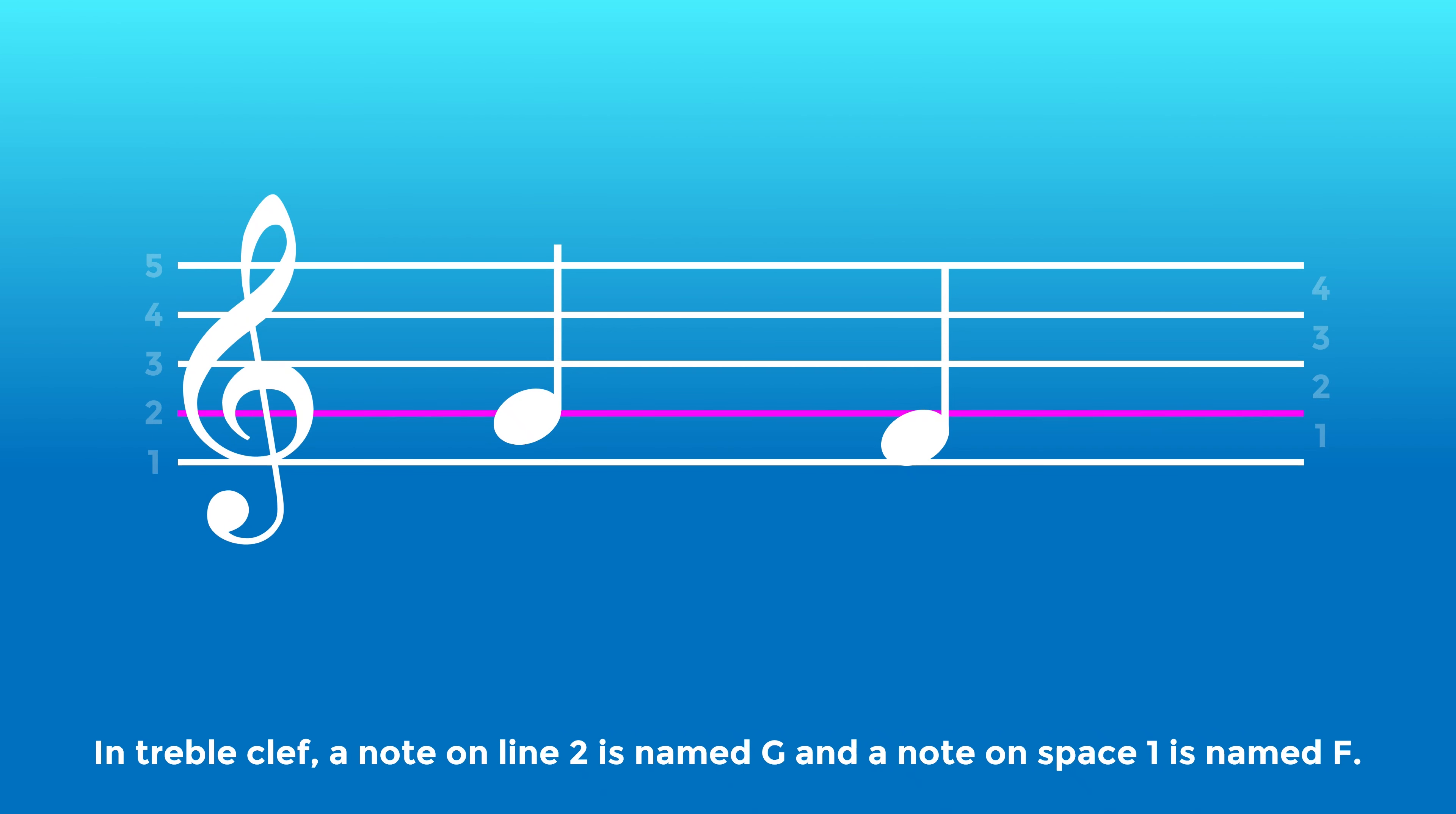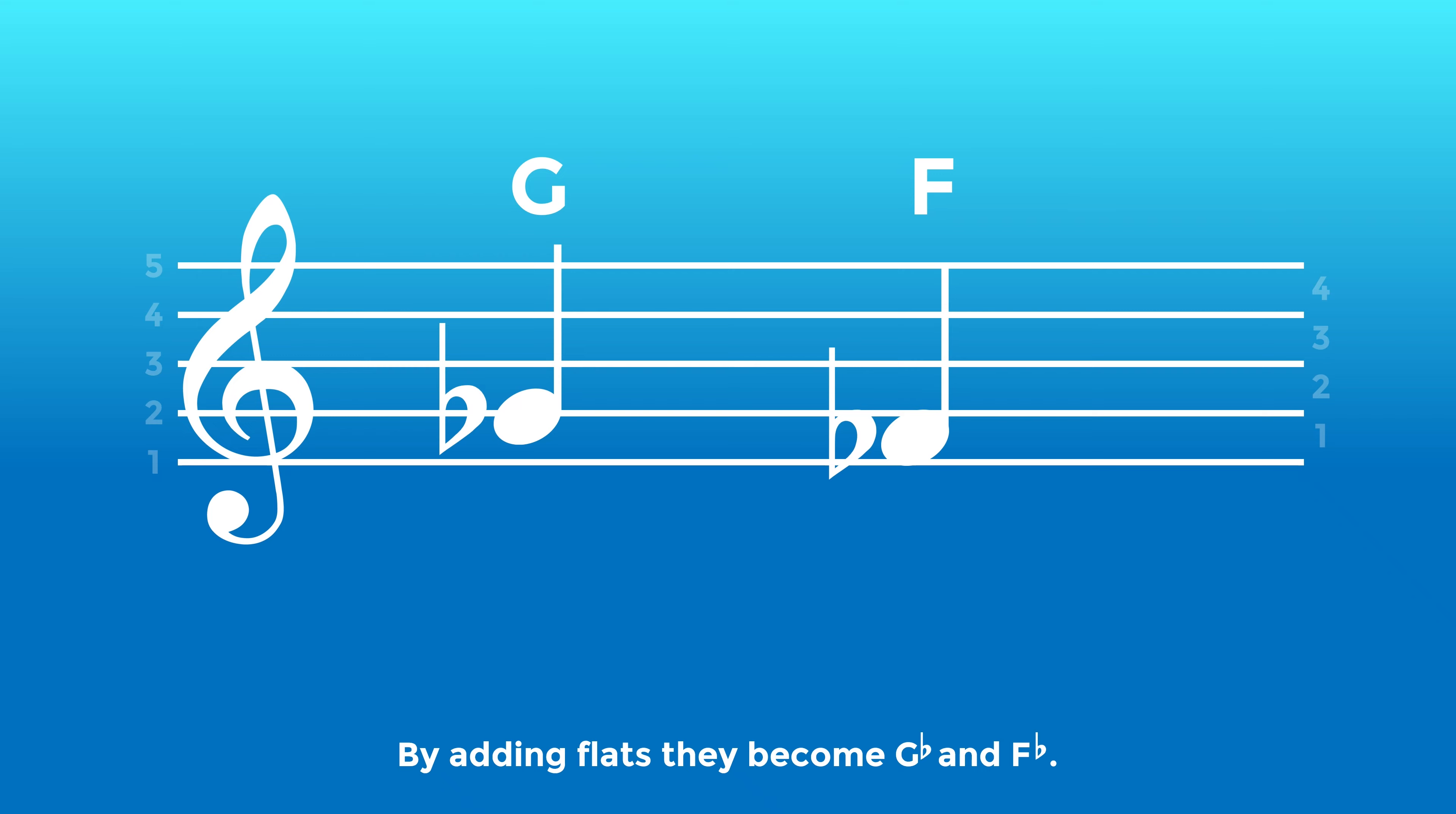In treble clef, a note on line 2 is named G and a note on space 1 is named F. By adding sharps, they become G sharp and F sharp.